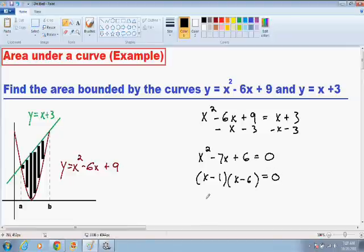And from this point, we know that x is equal to 1 and x equals 6. So our a is the low x value in which the two curves intersect, so a is equal to 1. And our b is the high x value in which the two curves intersect, so b is equal to 6.